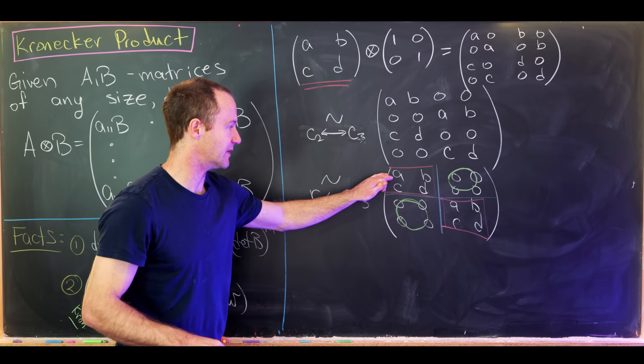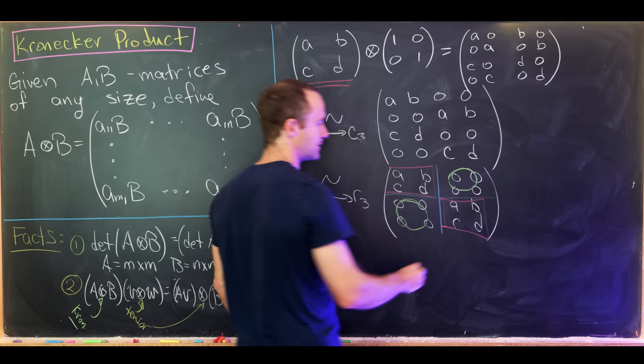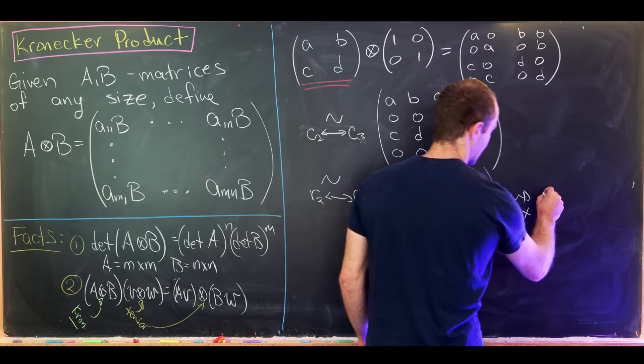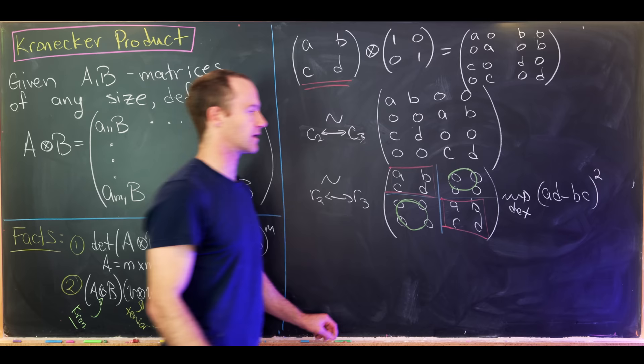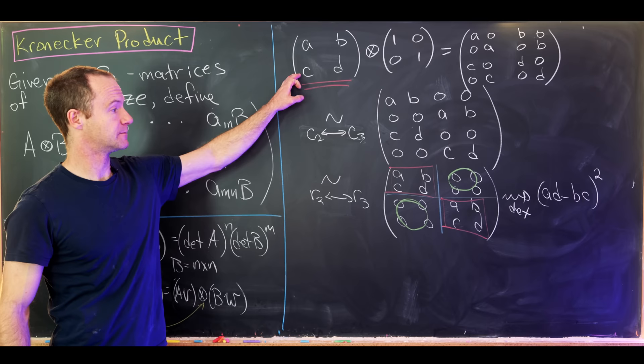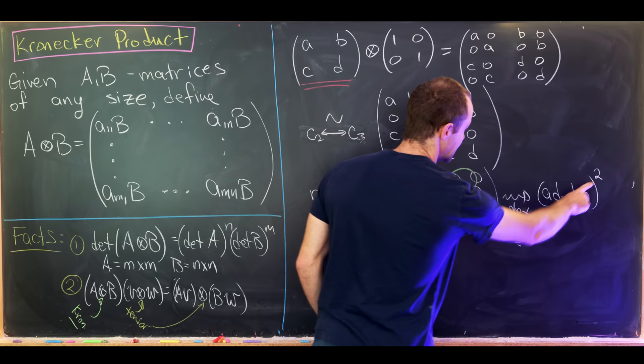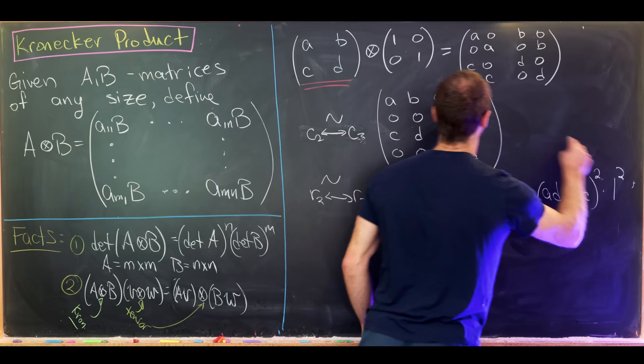When we take the determinant of this block diagonal matrix, we get the determinant of the upper 2×2 block times the determinant of the lower 2×2 block, which are the same — so it's (ad - bc)². This fits our formula: that equals det([[a,b],[c,d]])² times det(I₂)², confirming the rule for this 2×2 case.